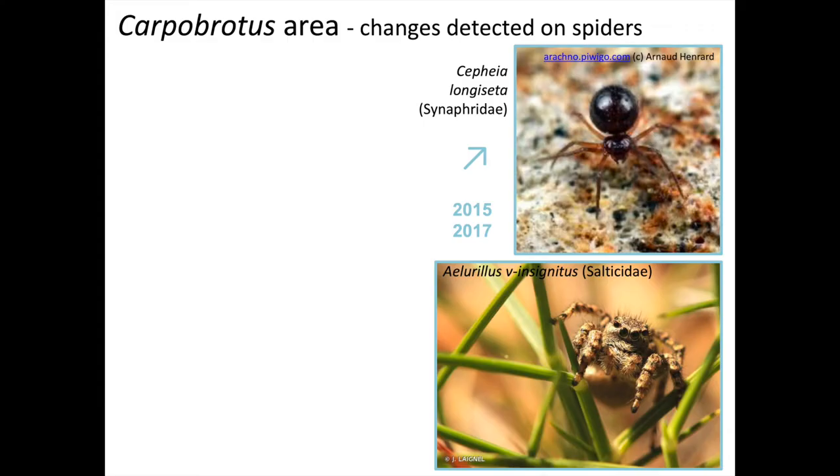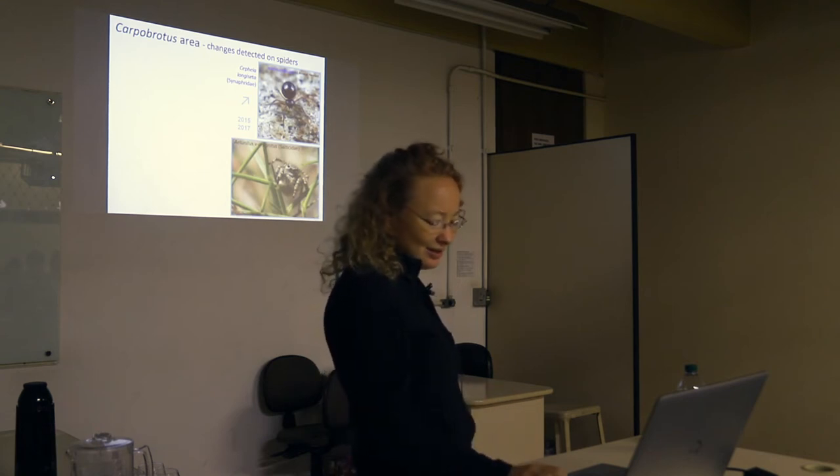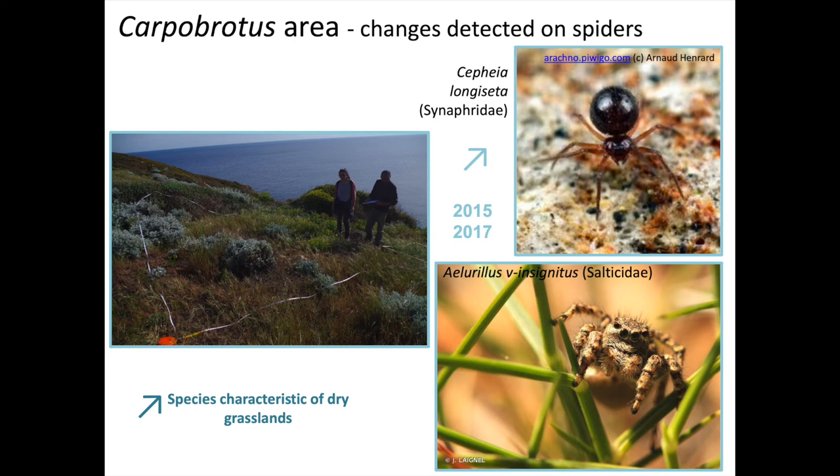Then we had species that increased in this area. Zelotes and Aelurillus are two species that increased in the area, and they're characteristic of dry grassland. So that kind of makes sense.